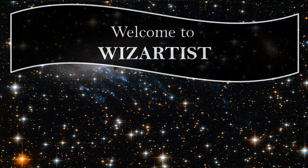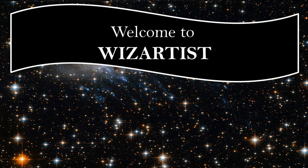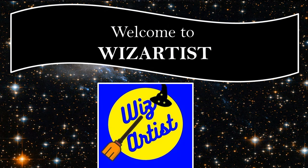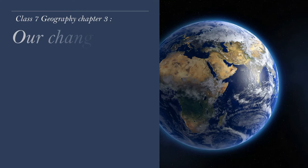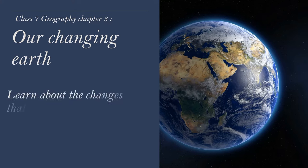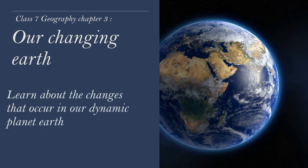Hello everyone. Welcome back to VisArtist. Today we will learn Class 7 Geography Chapter 3, Our Changing Earth, wherein we will understand about the various changes that happen in our dynamic planet Earth. In this video, we will learn about endogenic changes particularly.